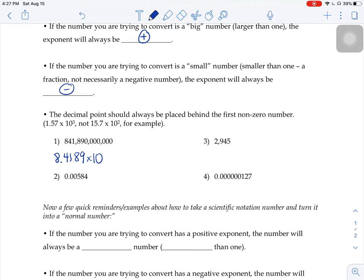So what we need to do is figure out if we temporarily put that decimal between the 8 and the 4, how many times do we have to move it to get it where it really belongs?